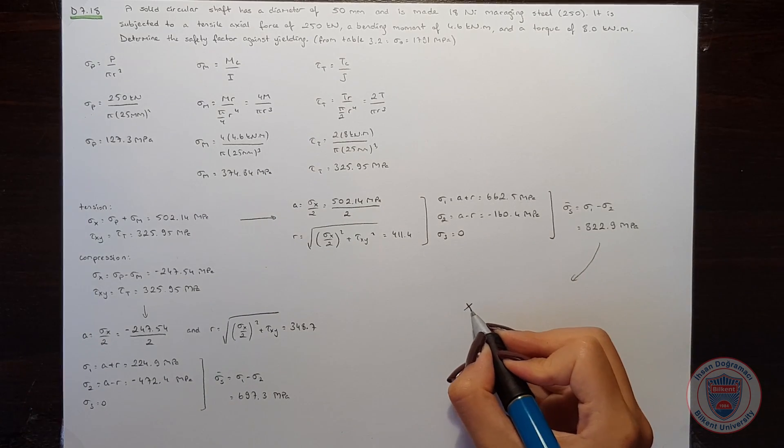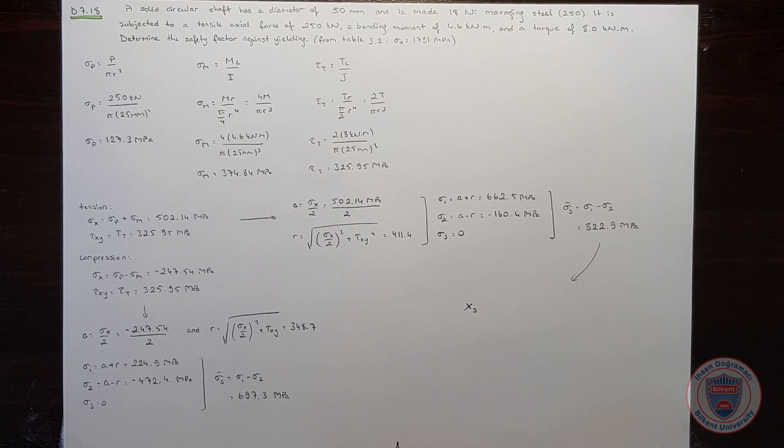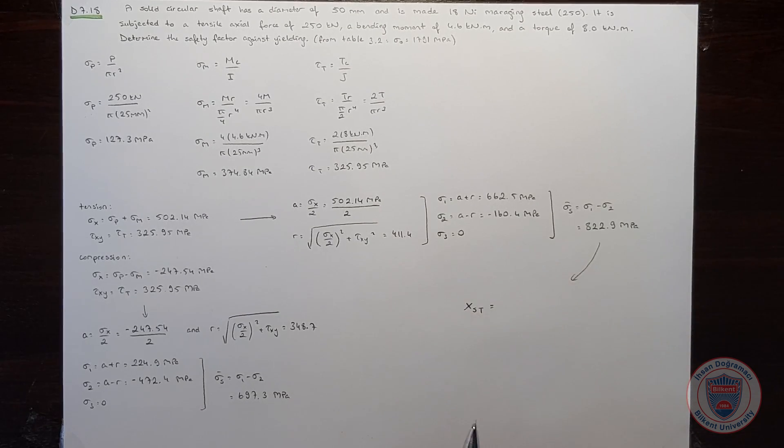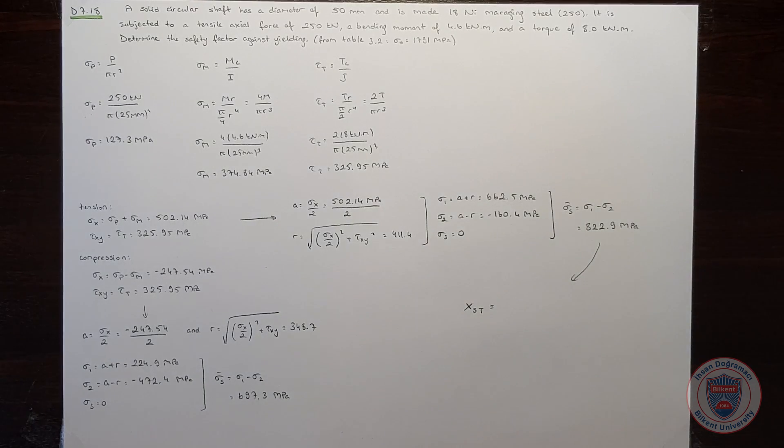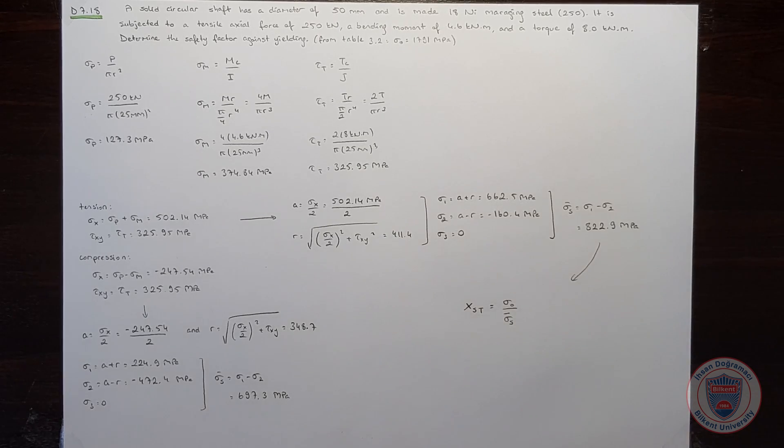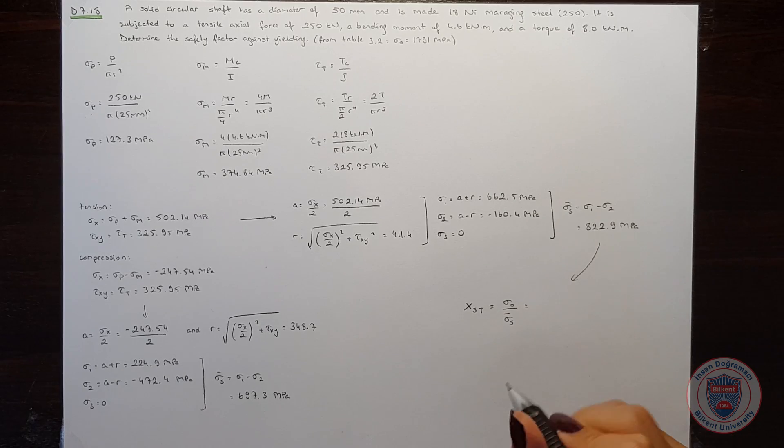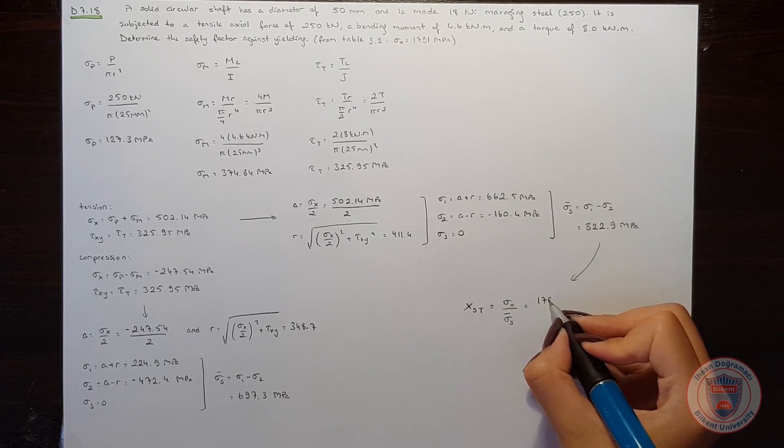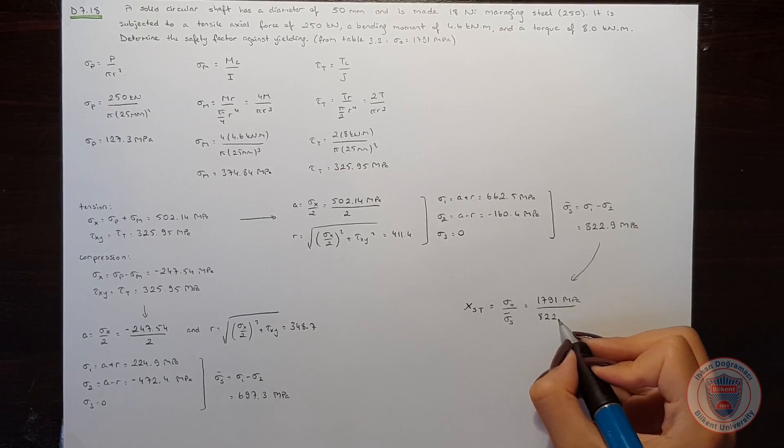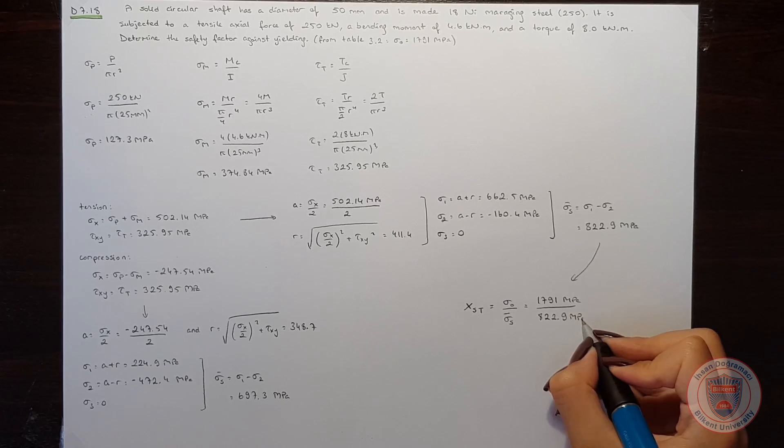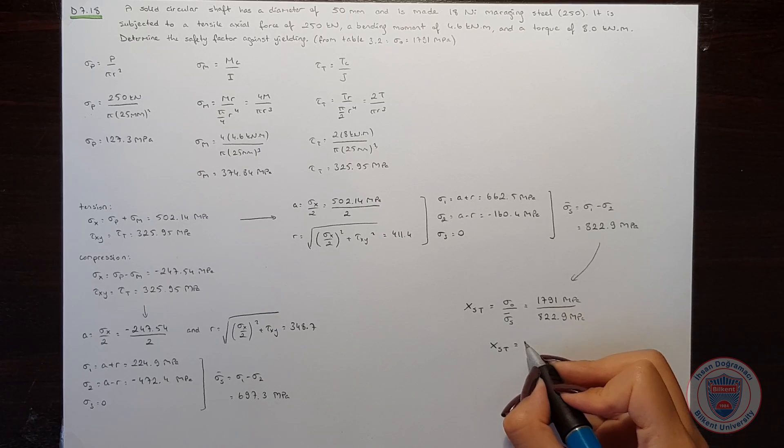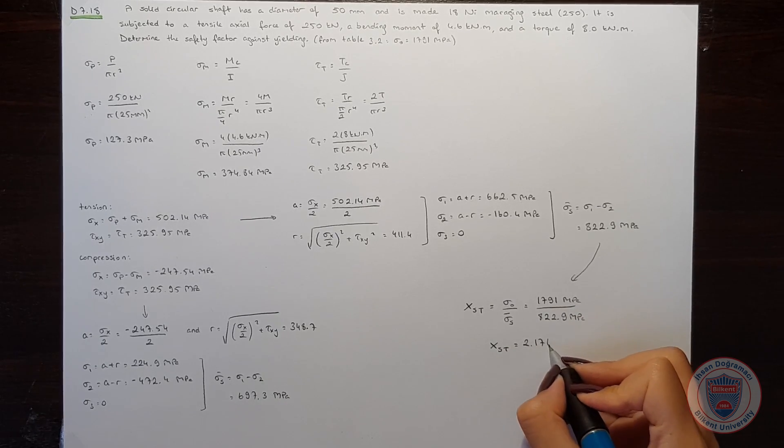We know that the safety factor, let's say this is st, so that we can understand we are considering the tension case. It will be equal to yield strength over sigma s. And it will be 1791 MPa over 822.9 MPa. And we will obtain xst is equal to 2.176.